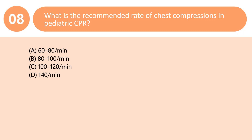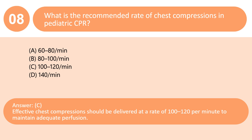What is the recommended rate of chest compressions in pediatric CPR? A. 60–80/min. B. 80–100/min. C. 100–120/min. D. 140 per minute. Answer: C. Effective chest compressions should be delivered at a rate of 100 to 120 per minute to maintain adequate perfusion.